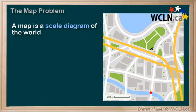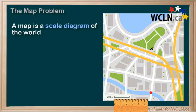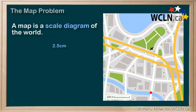But wait! This scale isn't like the one from the dog example. This scale has units attached to it that we need to pay attention to. We need to do a little bit of work. We take out our trusty ruler and measure the line next to the scale, which turns out to be 2.5 centimeters. So 200 meters in real life is 2.5 centimeters on this map.